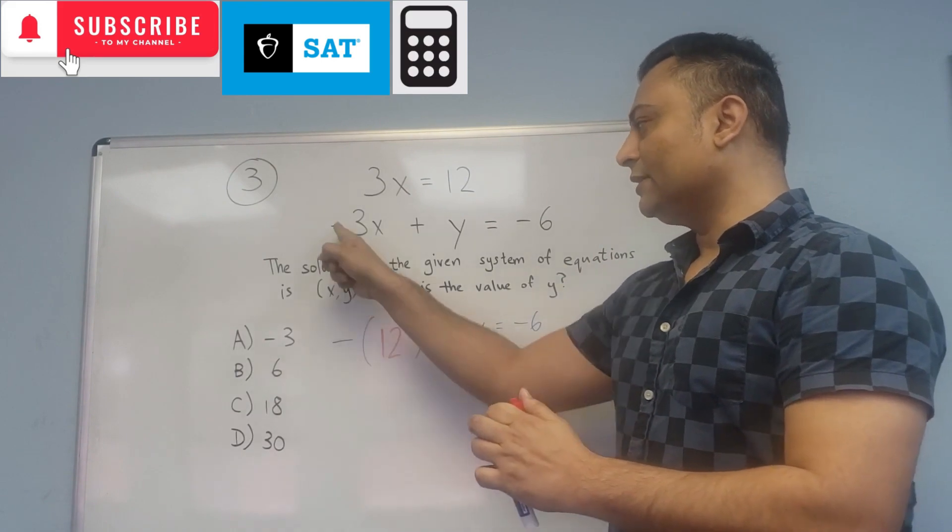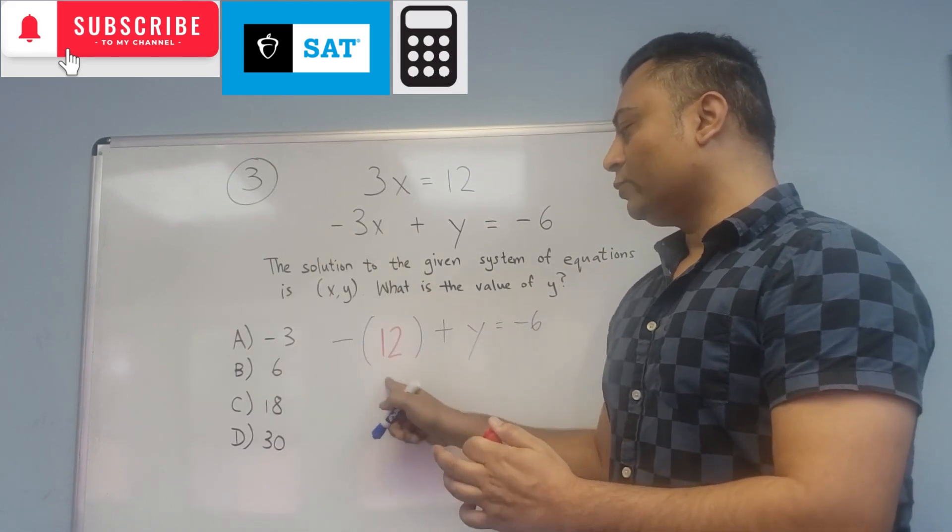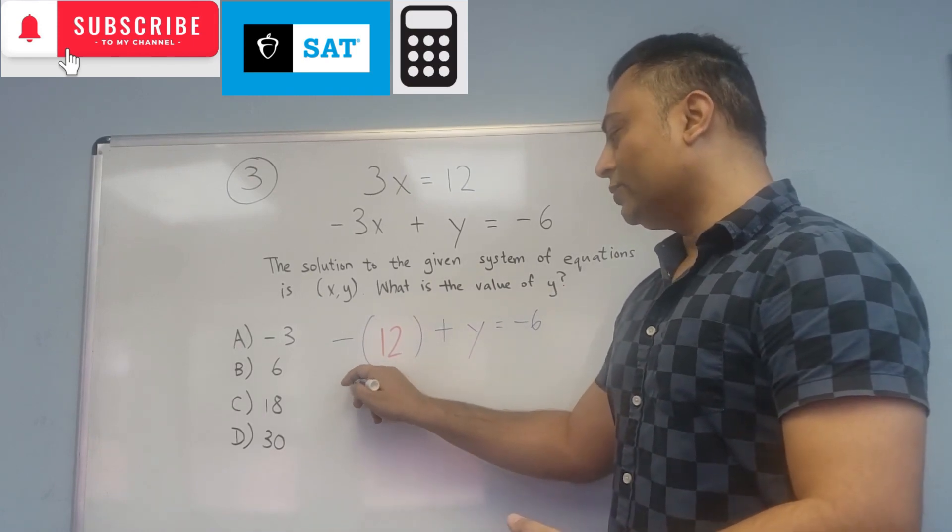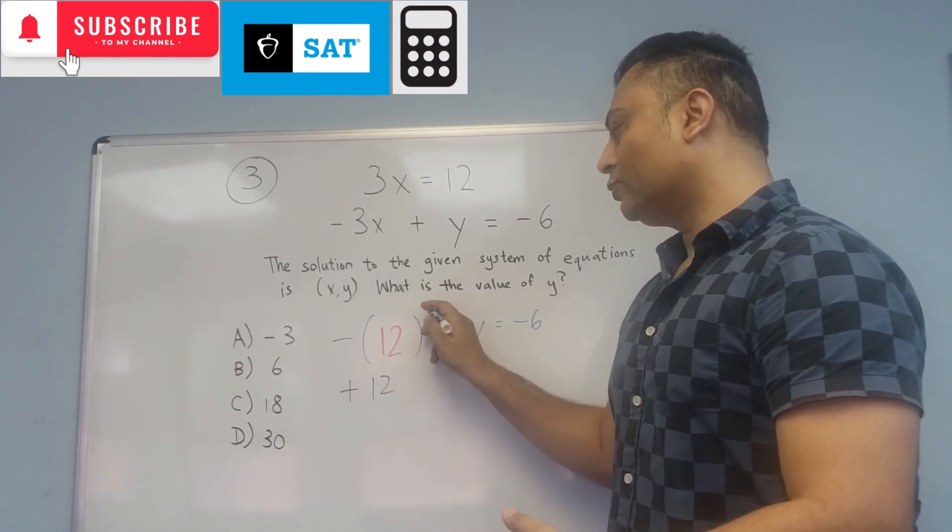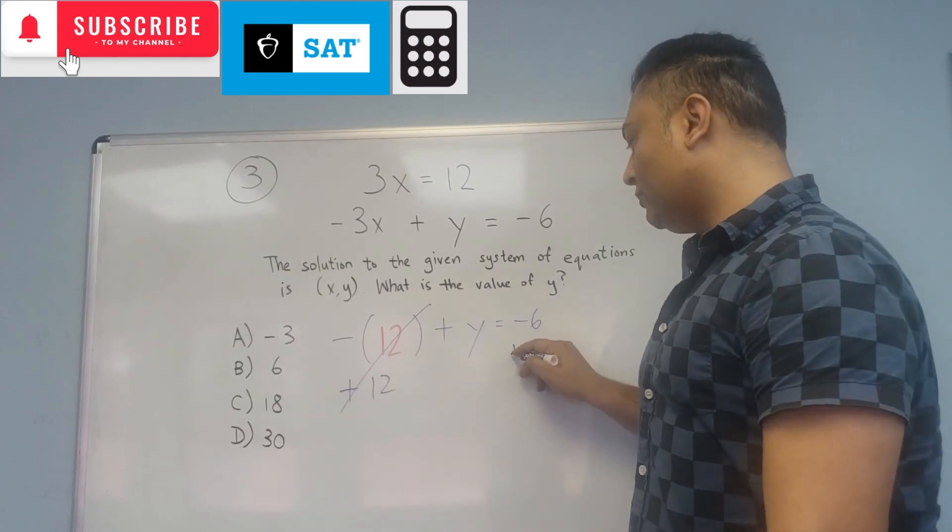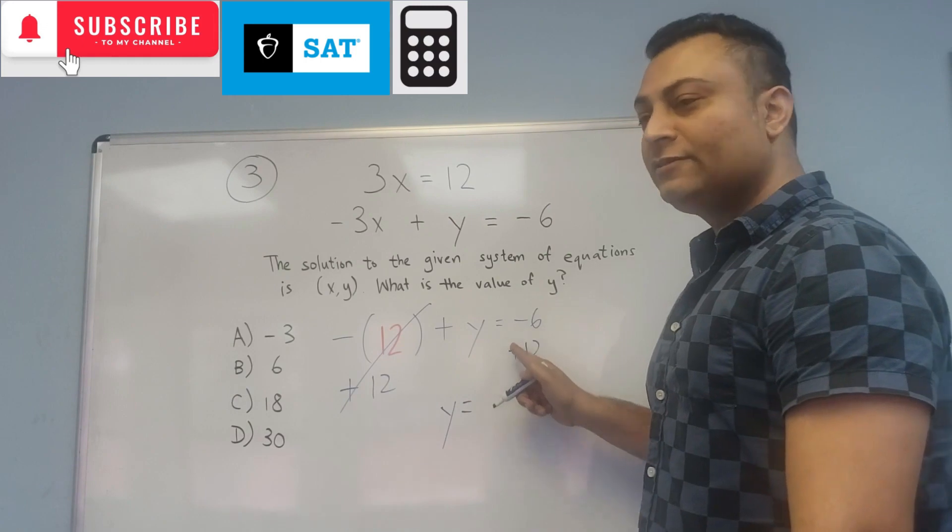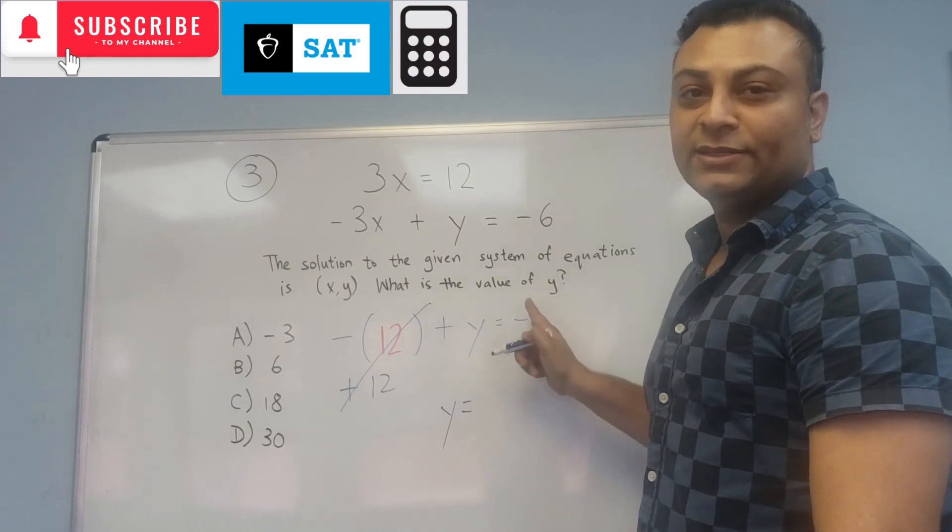Negative is on the outside. So you have negative 12 plus y equals negative 6. To solve for y, you would add 12 here, and 12 and negative 12 will go to 0. You add 12 here, and you get y equals negative 6 plus 12, which is 12 minus 6.